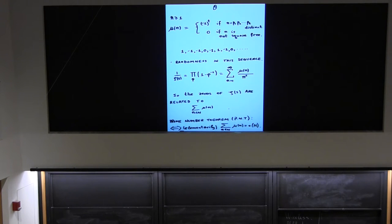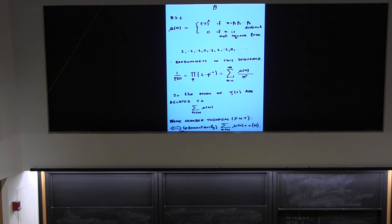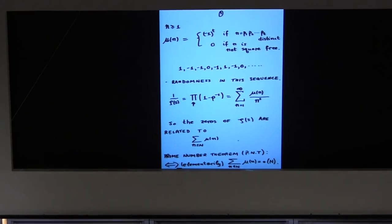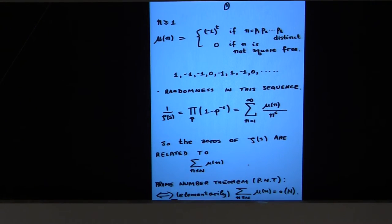The question is: can we capture the randomness in the sequence? The approach I want to discuss is impacted by dynamics and especially a notion introduced by Sinai and Kolmogorov called entropy. One reason this function is very important is that one over the Riemann zeta function equals the sum of mu(n) over n to the s. So the analytic properties of 1/zeta, obviously connected to the zeros of zeta, are connected to the partial sums of mu(n). The prime number theorem is elementarily equivalent to the statement that the sum of mu(n) up to N is little-o of N.